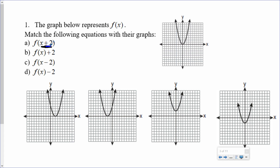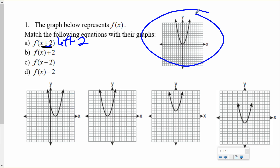Because I'm adding it to just the x, we're talking left and right. When you're in parentheses, it's the opposite direction you would think, so it's going left 2. If this is my original graph, which one was translated 2 units to the left? This one. For B, I see plus 2 — am I adding to the x, or am I adding to the whole f(x)? I'm adding to the whole thing, so it's going up 2. Which graph is going up 2 from the original? This one. The vertex went up 2, and the previous vertex went left 2.